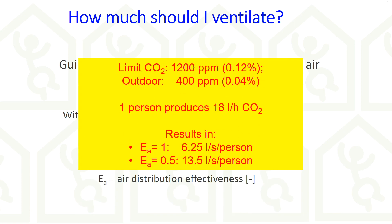Assuming a limit value of 1200 ppm, an outdoor concentration of 400 ppm, and a seated adult producing 18 liters of CO2 per hour, this would result in a required ventilation rate of 6.25 liters per second per person for a ventilated room with an effectiveness of 1, and twice as much for a room with an effectiveness of 0.5. Whether these values are enough to prevent transmission is not yet known.